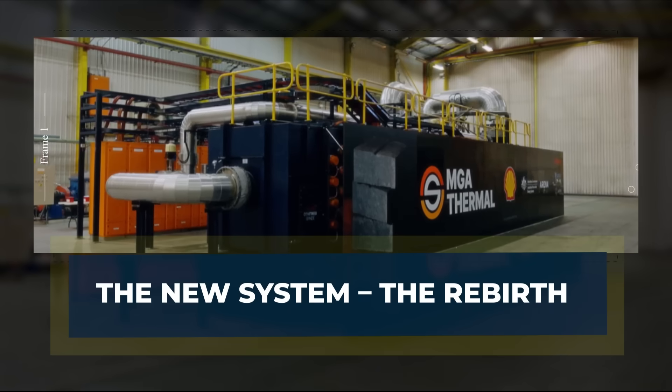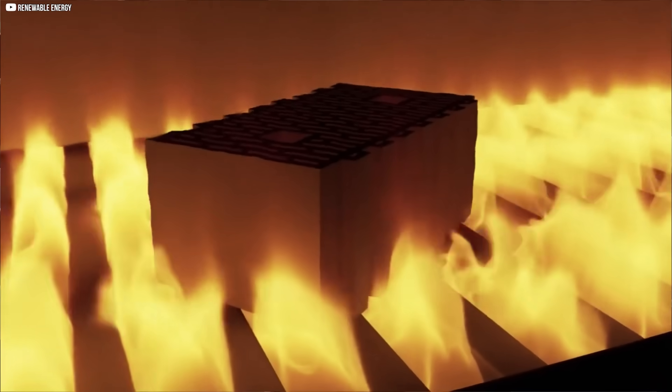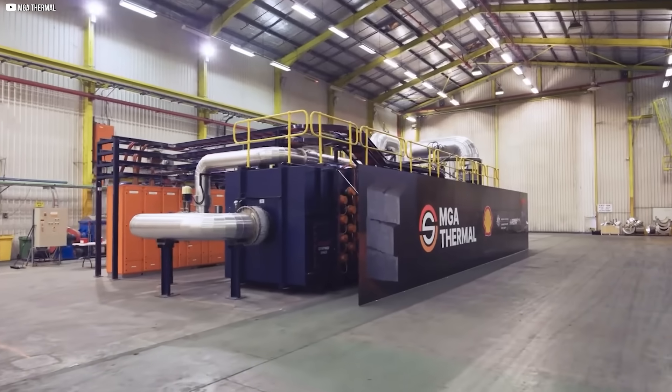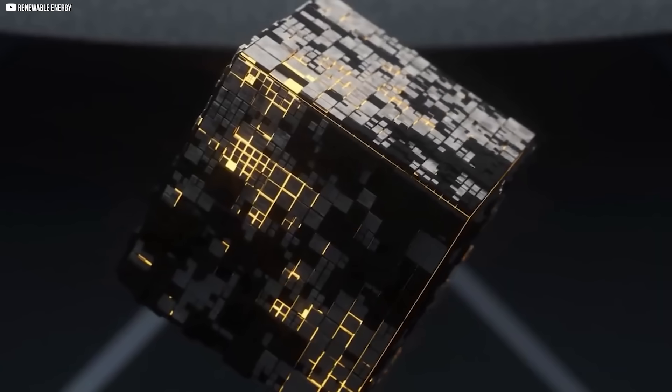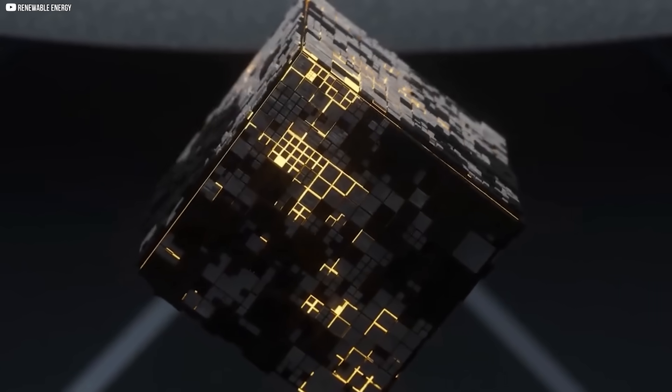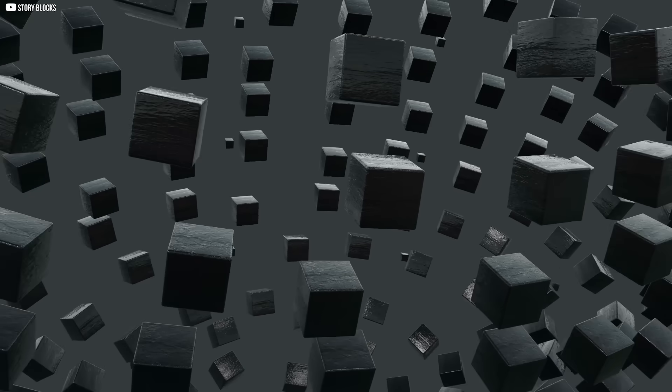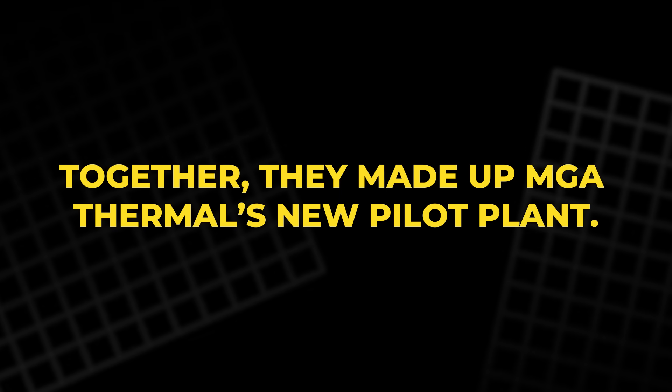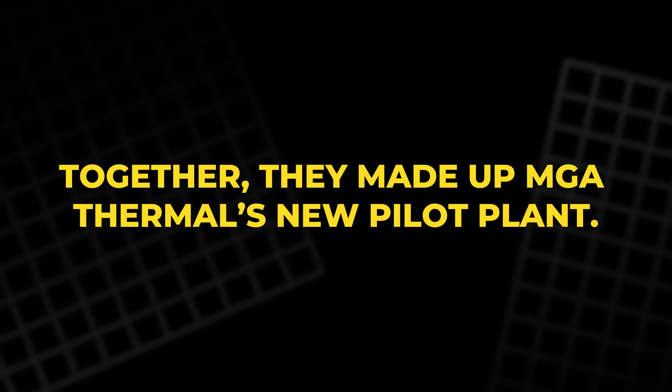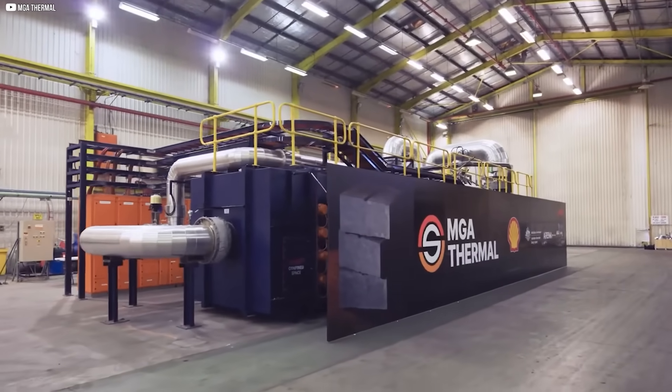The new system. The rebirth. Out in the field, just beyond the scars of the fire, a new shape rose. Not sleek or futuristic. Just a squat, boxy container filled with rows of graphite blocks. Nearly 3,700 of them. Each one a silent witness to what came before. Together, they made up MGA Thermal's new pilot plant. A 5-megawatt-hour, 500-kilowatt system.